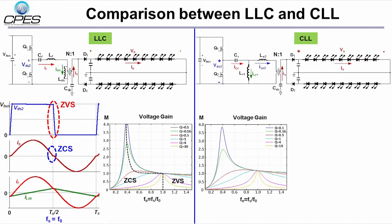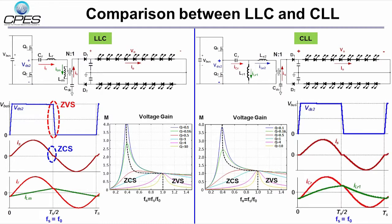The voltage gain characteristics of CLL is very similar to LLC's. When it is working around the resonant frequency, D1 and D2 can achieve ZCS, and Q1 and Q2 can achieve ZVS as well.